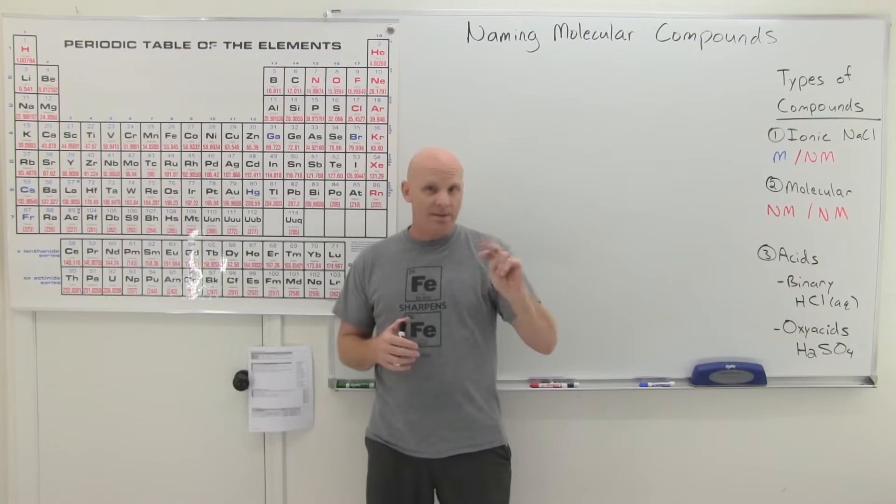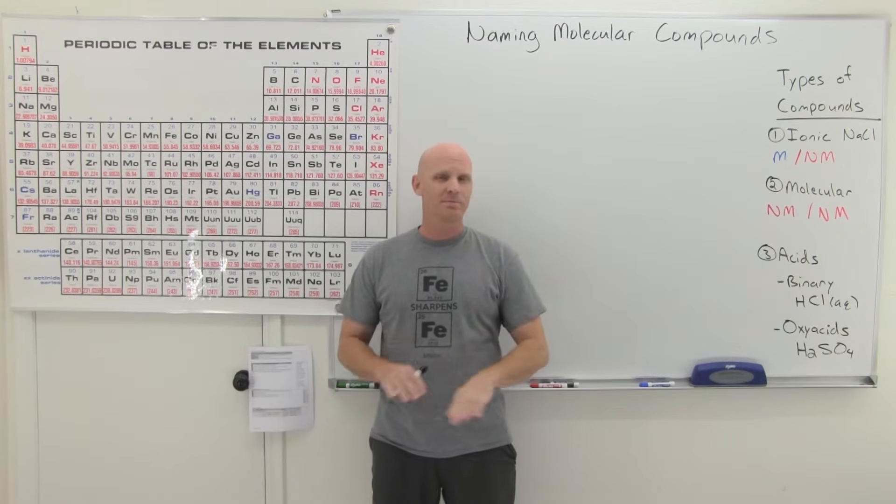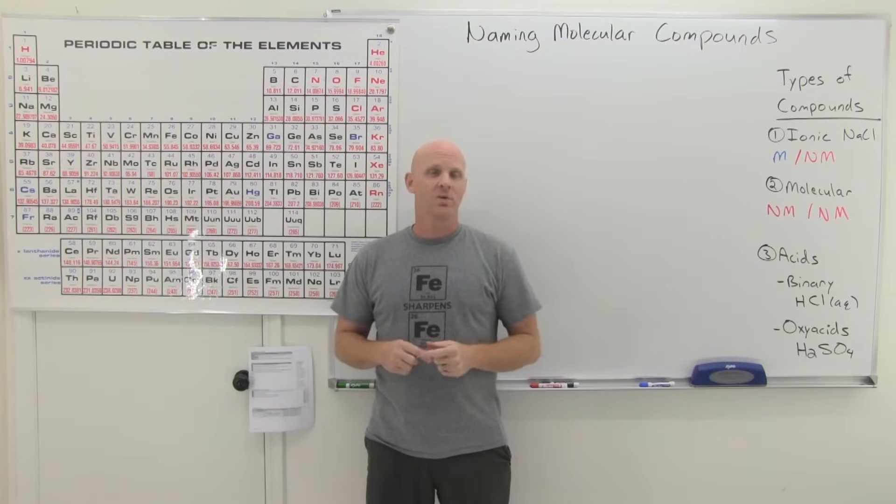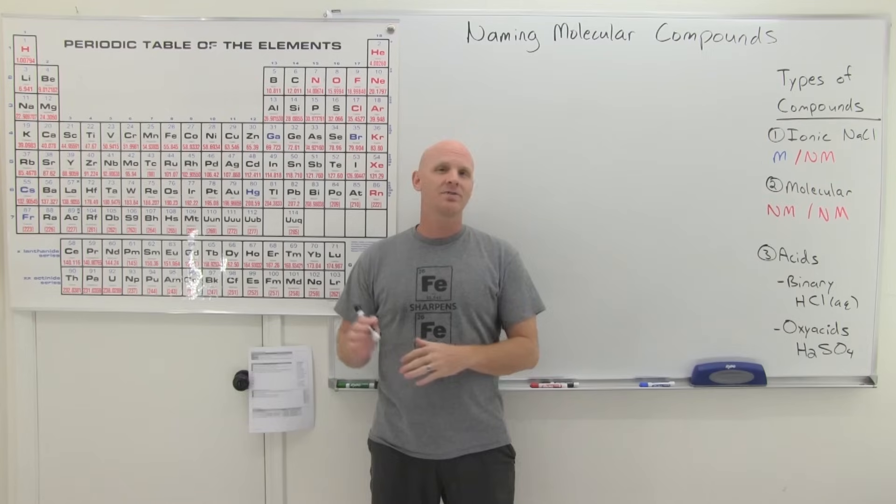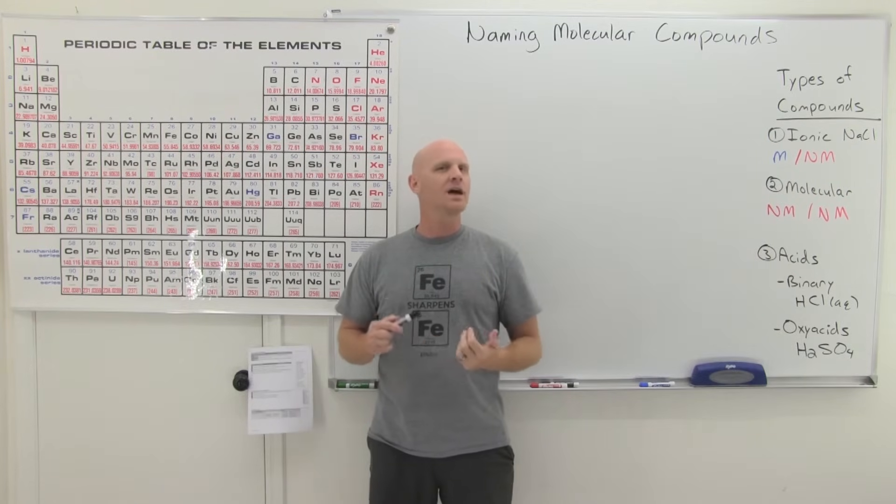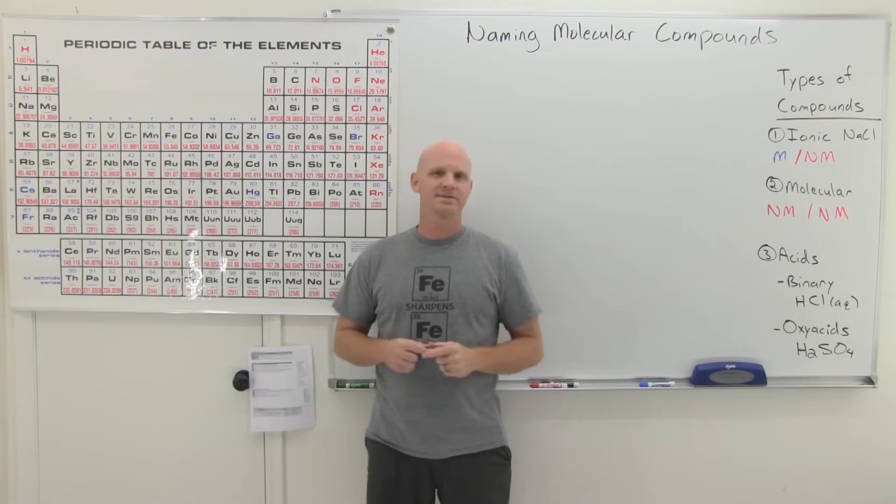Binary meaning there's only two elements in these molecular compounds. It's as complex as we're going to get. We're going to go through several examples, and we'll find out that this is probably a little bit easier than naming ionic compounds, which we saw in the last lesson.